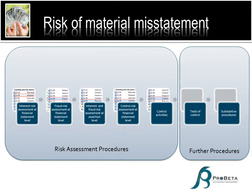So in Probe, we have ordered it as follows. We do 1120 first — inherent risk at financial statement level. Then we do 1130, control risk at financial statement level. Then we do 1140, fraud risk at financial statement level. It makes logical sense because it looks at everything at an overall level before we look at the specifics. Then we look at the control activities first — that's at the specific assertion level, or activity level.